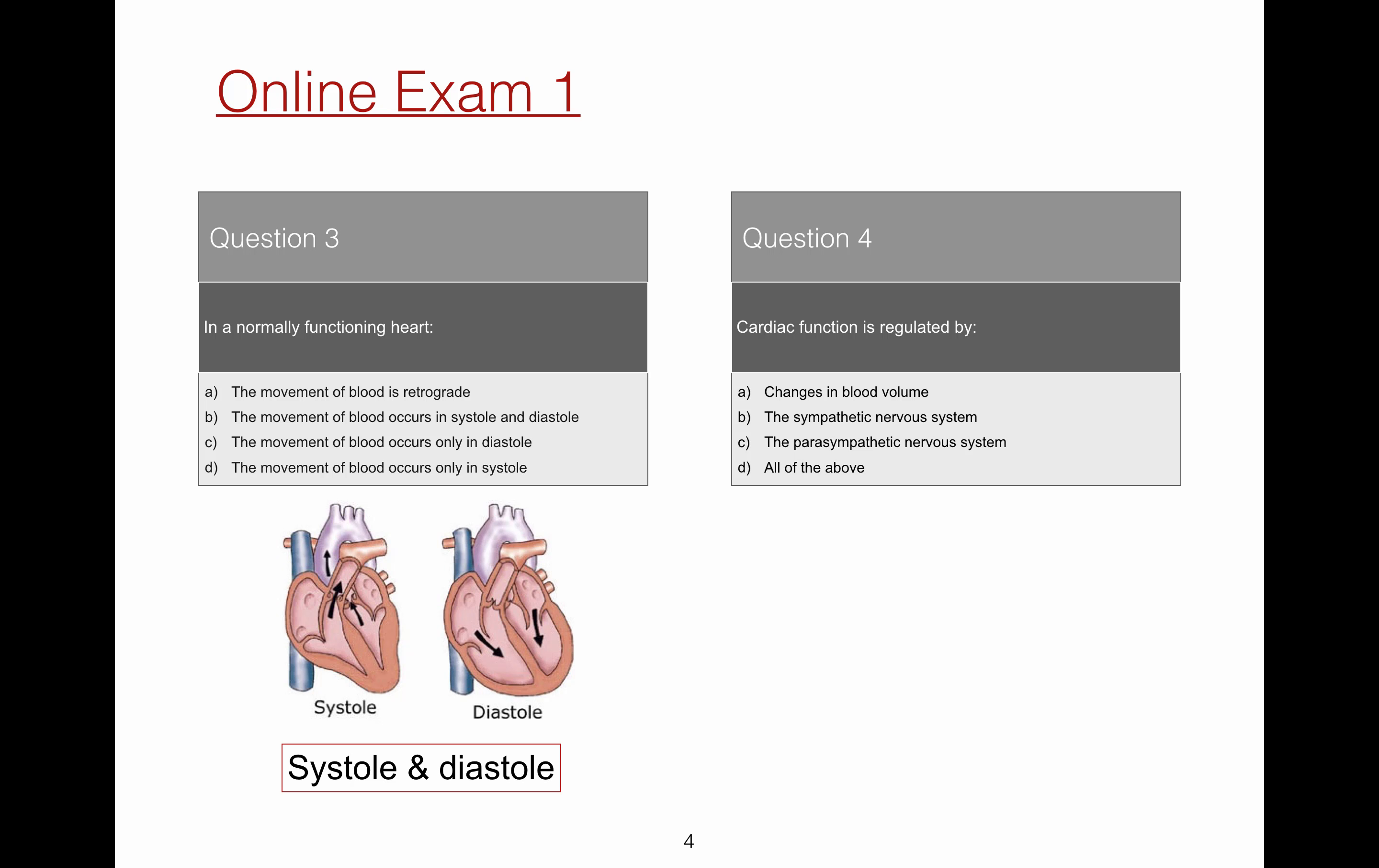Question 4. Cardiac function is regulated by multiple factors influence cardiac function, including volume, the parasympathetic nervous system and sympathetic nervous system. Therefore, it's all of the above multiple factors influence cardiac function.